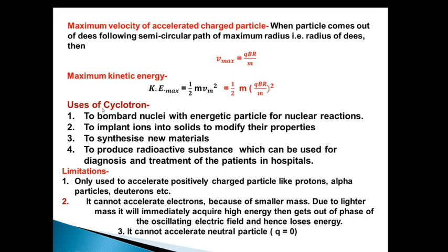The uses of cyclotron: Cyclotron is used to bombard nuclei with energetic particles for nuclear reactions. It is used to implant ions into solids to modify their properties and to synthesize new materials. It is used to produce radioactive substances which can be used for diagnosis and treatment of patients in hospitals.